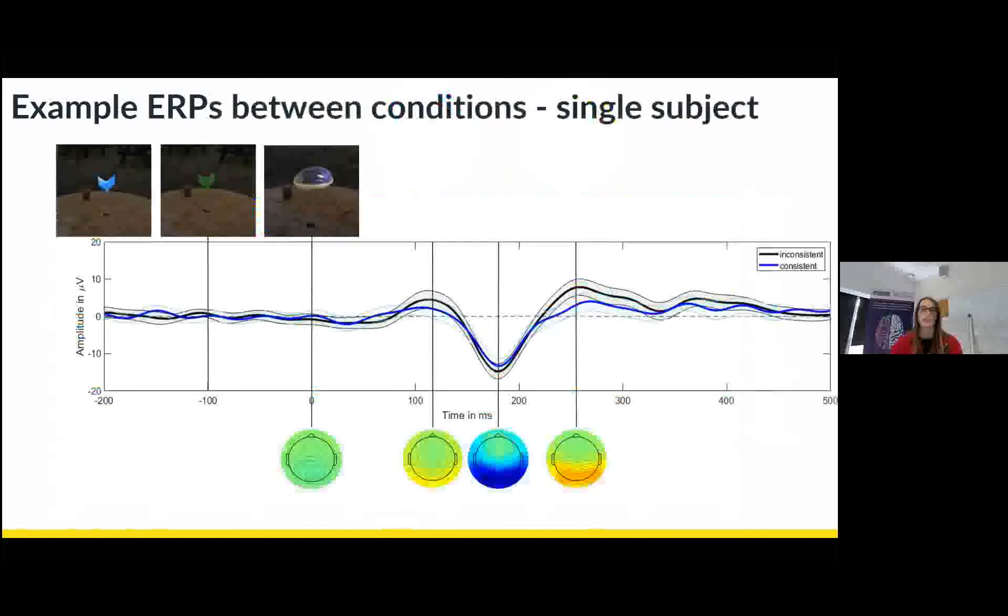And then just as an example of differences between conditions, the black is the mean for inconsistent trials and the blue, the mean for consistent trials. And you can see that there's some differences at around 250 milliseconds and some differences potentially around 300, 390 milliseconds. But this is for one participant, so I'm not going to draw conclusions.